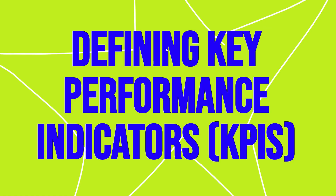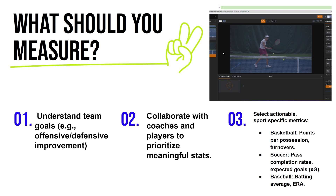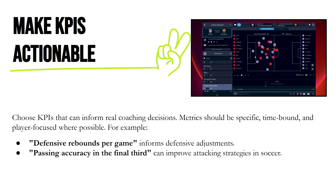When starting analytics, the first thing is to define your KPIs — your key performance indicators. Go into a season knowing what you're measuring. Understand your team's goals: are they offensive or defensive, what are you trying to improve? Collaborate with players and coaches to define meaningful stats. In basketball you might track points per possession or turnovers; in soccer, pass completion rates or expected goals; in baseball, batting averages.